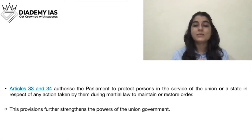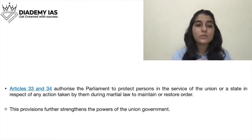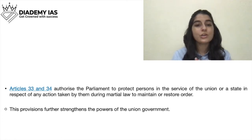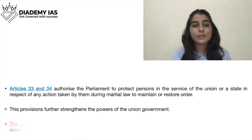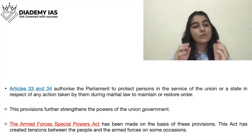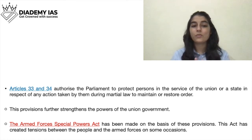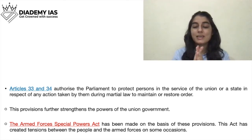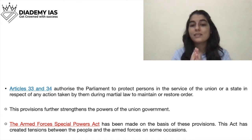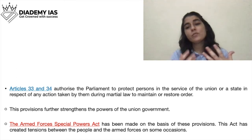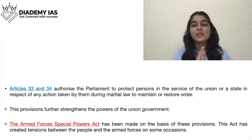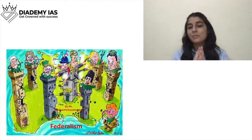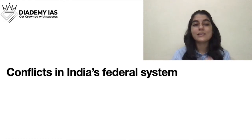Articles 33 and 34 authorize Parliament to protect persons in the service of the Union or a state in respect of actions taken by them during Martial Law to maintain or restore order. Under these provisions, Parliament has more power, and this also strengthens the powers of the Union Government. AFSPA - the Armed Forces Special Powers Act - is related to this. Due to these provisions, there is a lot of tension as State Governments revolt against such provisions made by the Central Government.